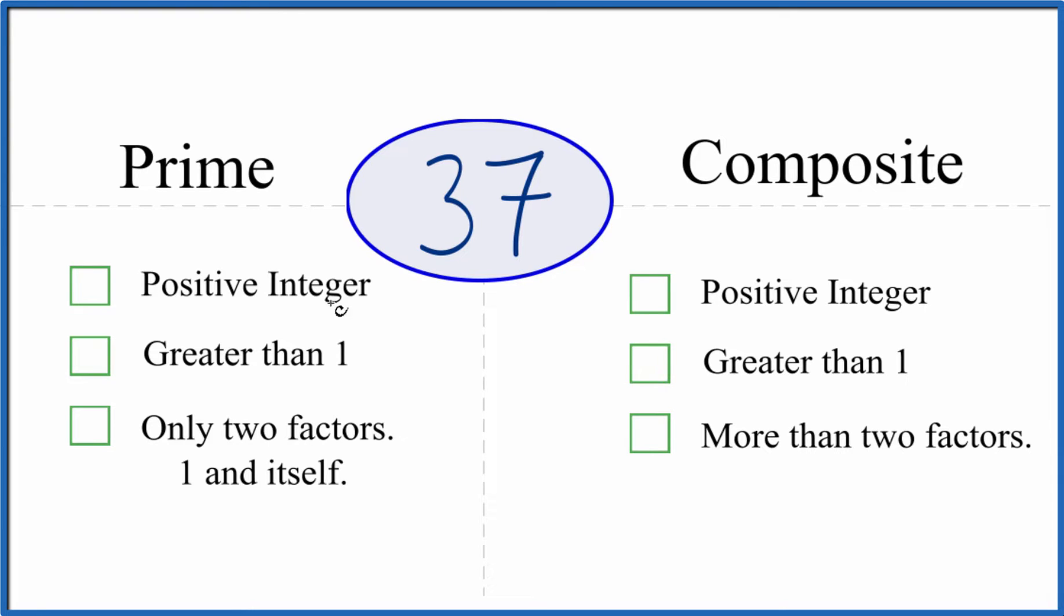We ask ourselves, is it a positive integer? 37, that's a positive number, a whole number. It's greater than 1. And does it only have two factors, 1 and itself?